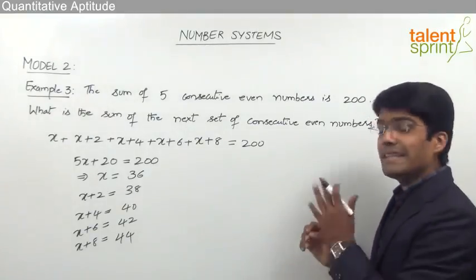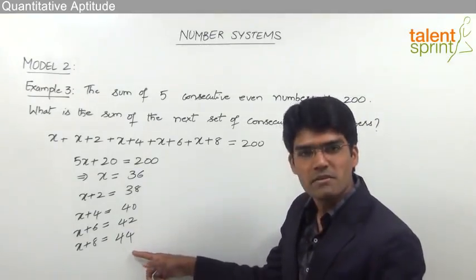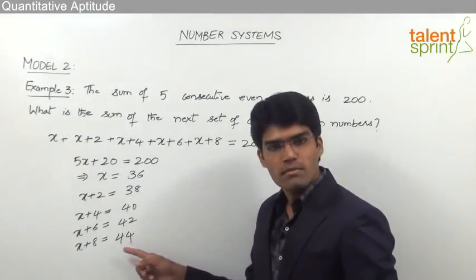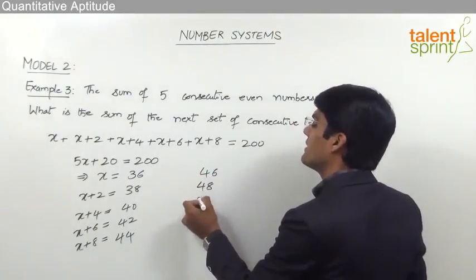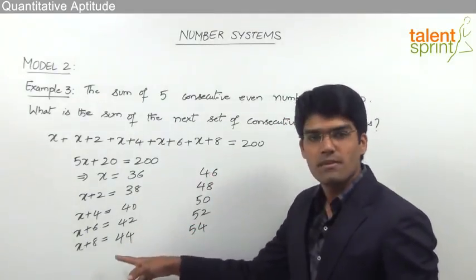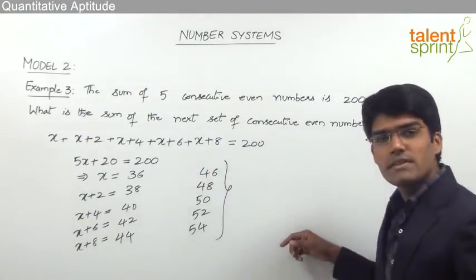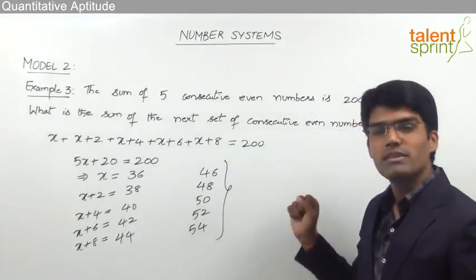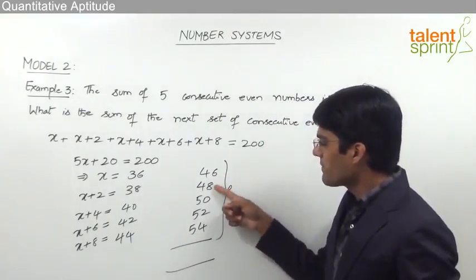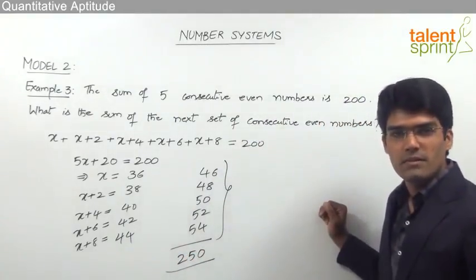We need the sum of the next 5 consecutive even numbers after 44, which are 46, 48, 50, 52, and 54. The sum: 46+54 = 100, 48+52 = 100, plus 50 gives 250. So the sum of the next 5 consecutive even numbers is 250.